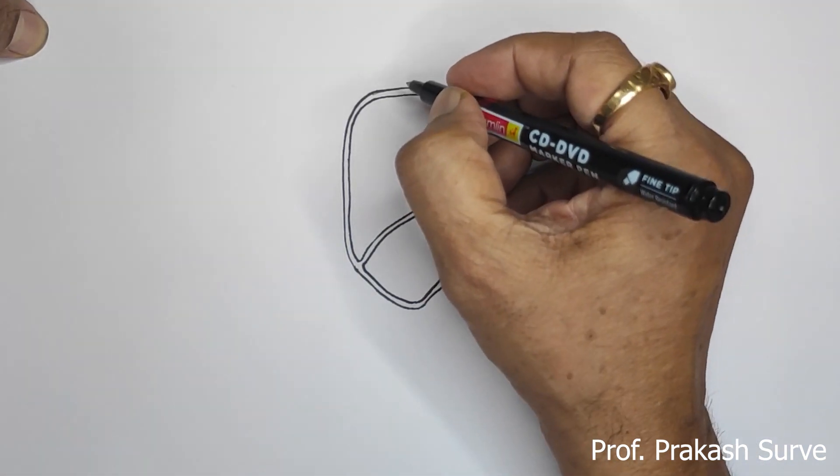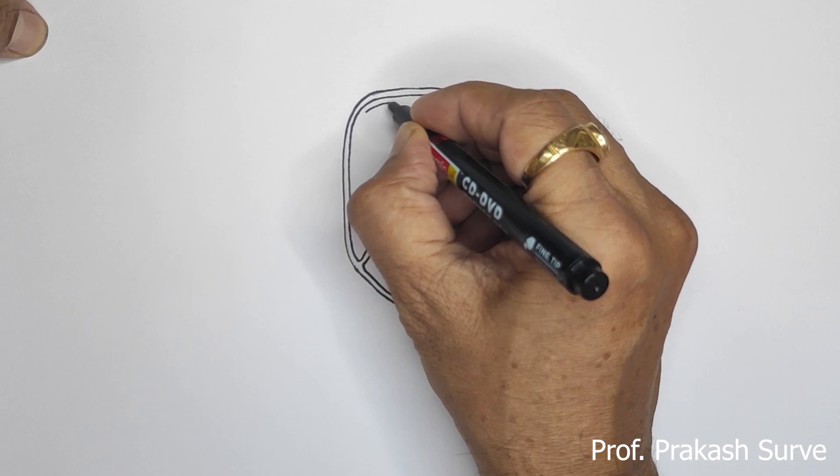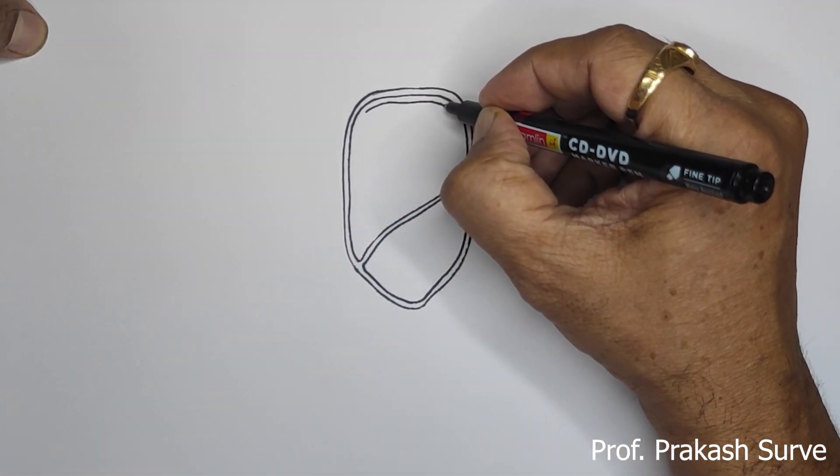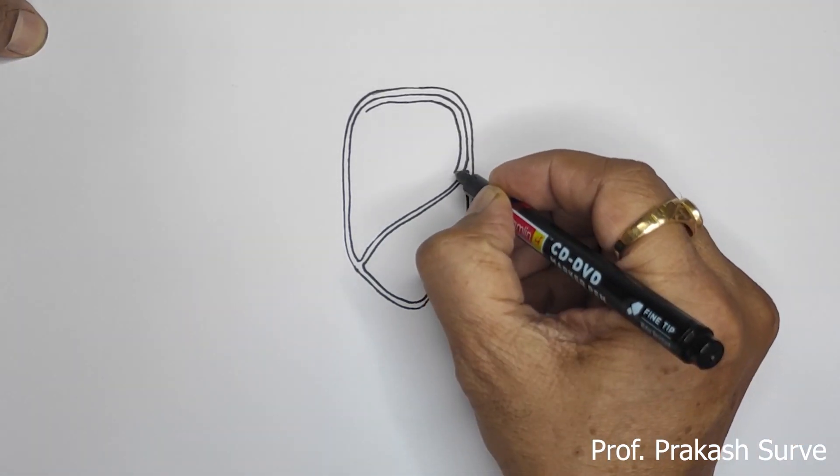Now inner to this, we'll draw the aleurone layer, which is in the endosperm area.